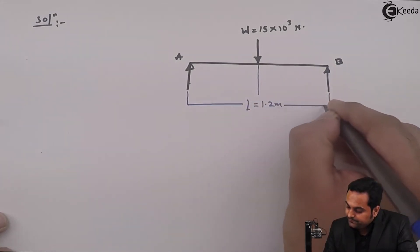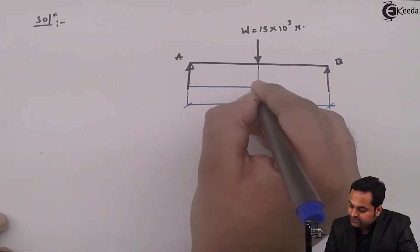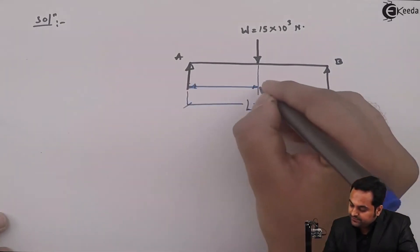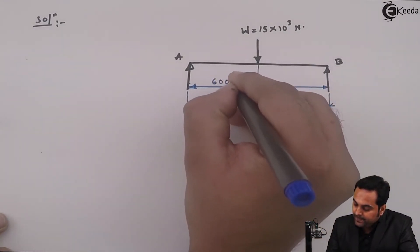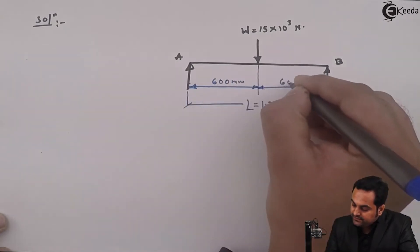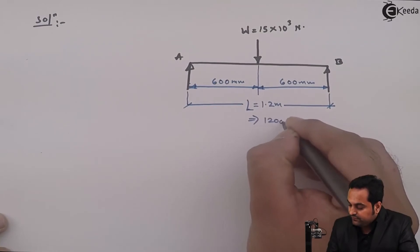So here this distance will be 0.6 meter, 0.6 meter, or I can say 600mm and 600mm on both the sides because the length is of 1200mm.